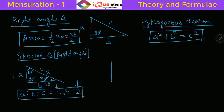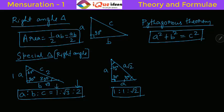Another special triangle is the isosceles right angle triangle. If the triangle is isosceles, the two equal sides mean this is 90 degrees and the other two angles will be 45 and 45. If the two equal sides are each A, then the hypotenuse has to be A root 2. So the sides ratio is 1 to 1 to root 2.